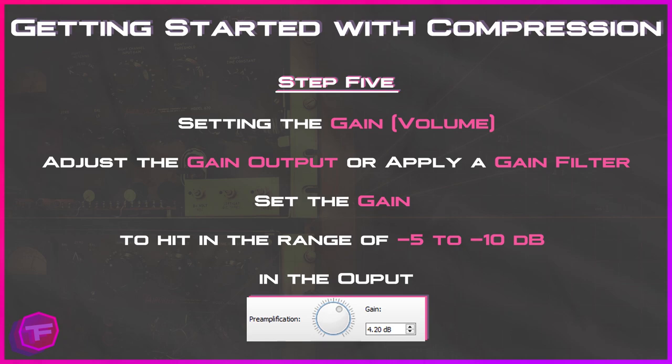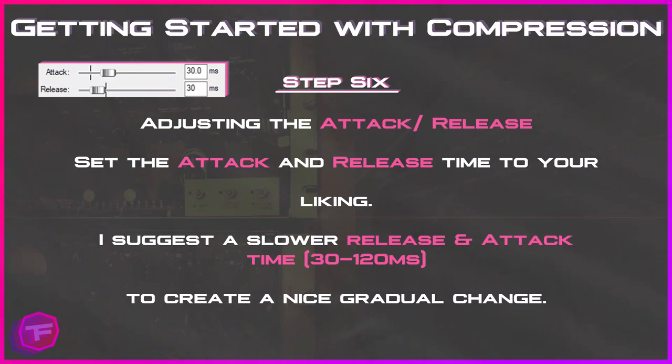Step five: setting the gain or volume. Adjust the gain output or apply a gain filter to the microphone and make sure the level of the volume is hitting in the range of negative 5 to negative 10 decibels on the output. If you're using OBS, monitor your microphone volume and make sure it's hitting anywhere from negative 5 to negative 10 decibels. I have mine hitting right at negative 10. I wouldn't suggest going below negative 15 decibels.